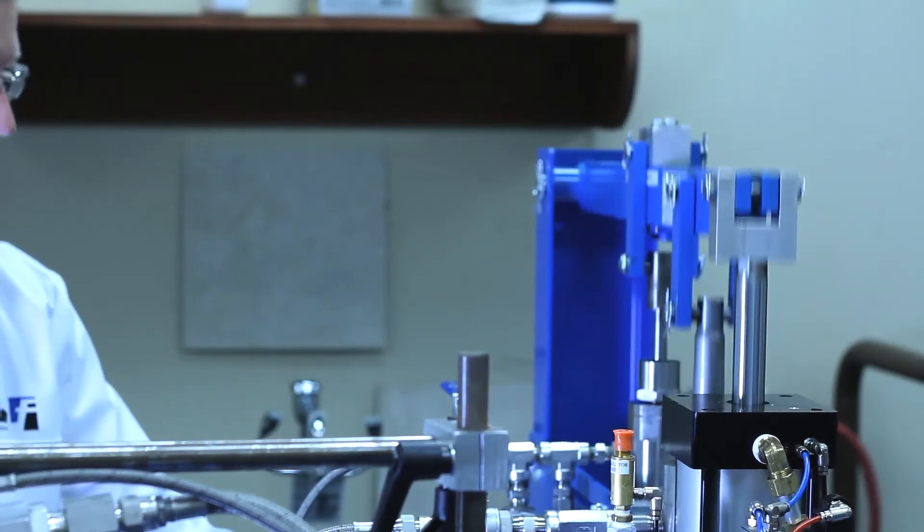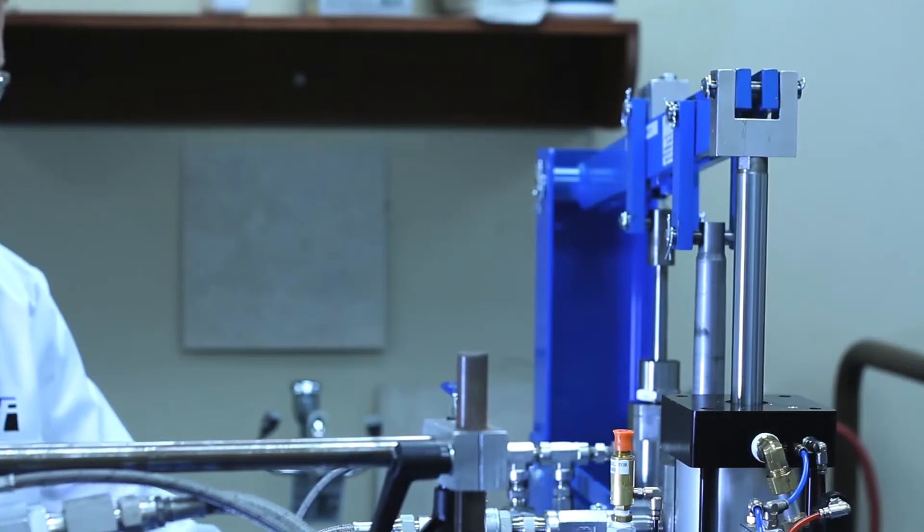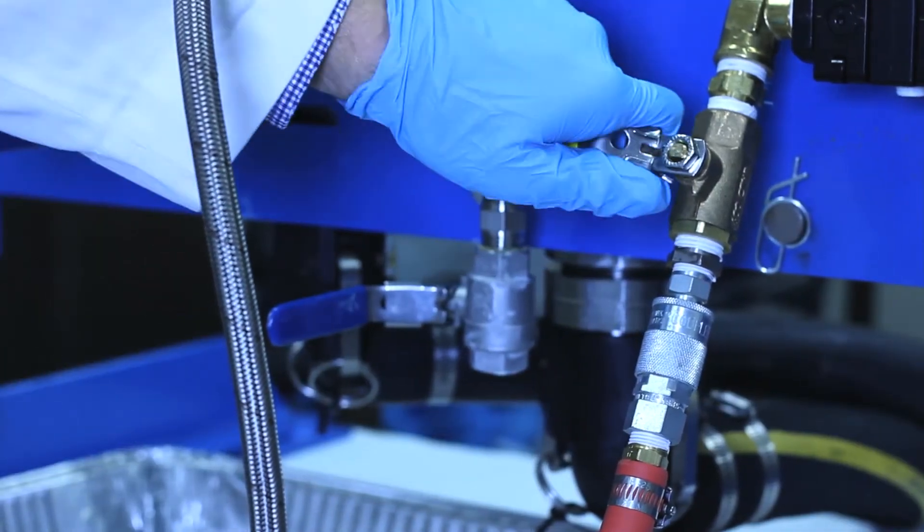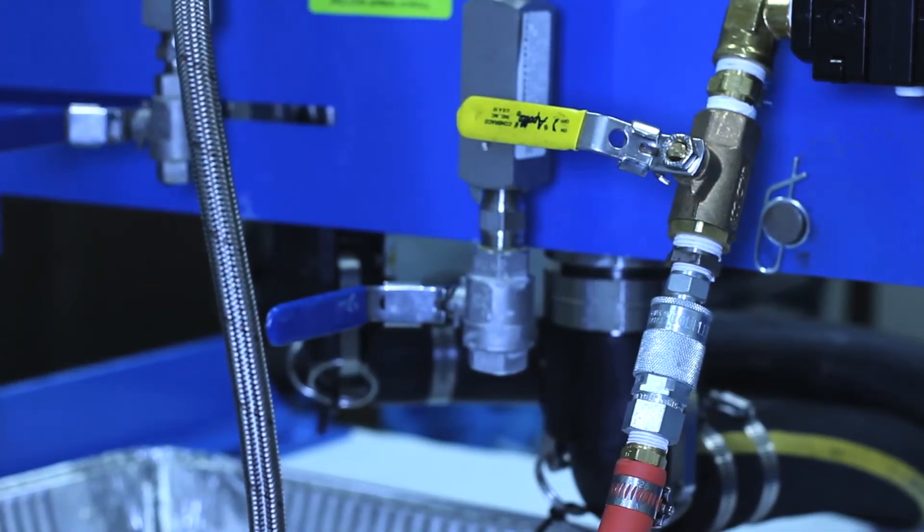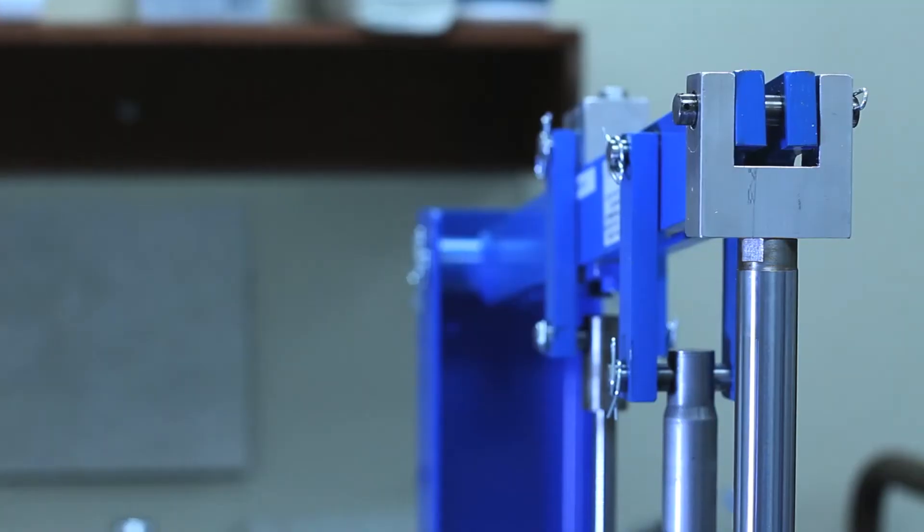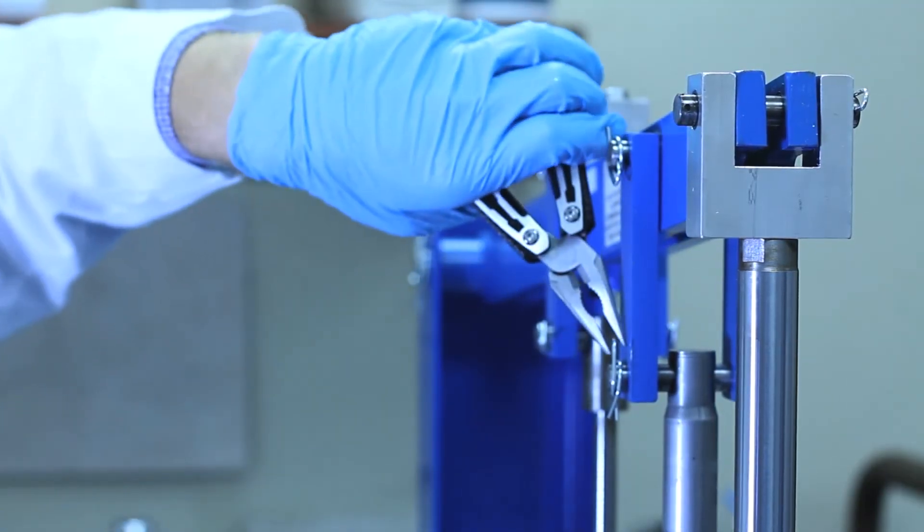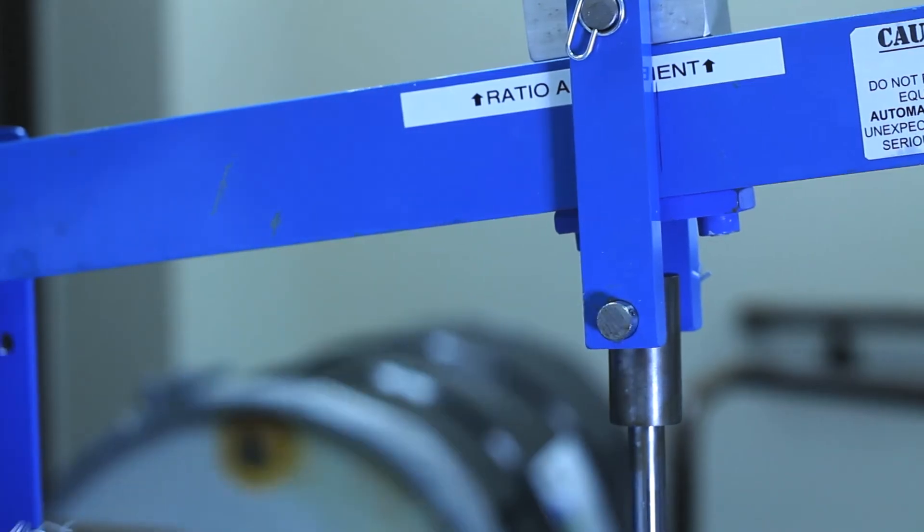First, you should cycle the pumps so they are at the top of their stroke. Then, turn off the air supply to the system temporarily so no one can accidentally cycle the pump while it's being worked on. Remove the lower pins from the hardener pump, resin pump, and the air cylinder.